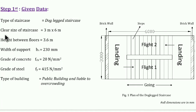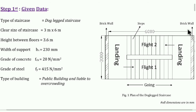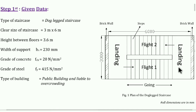From the given data, the clear size of the staircase is 3 meter by 6 meter. Here 3 meter is the width of staircase and 6 meter is the length of the staircase, plotted as 3000 mm width and 6000 mm length. The brick wall support of 230 mm is shown. In a dog-legged staircase there are two flights, which move at 180 degrees. These parts are the landings and the middle portion is known as the going.